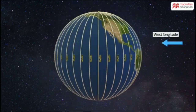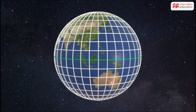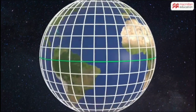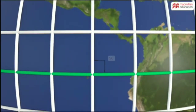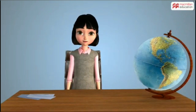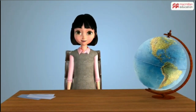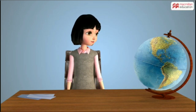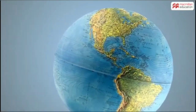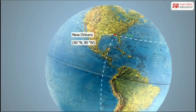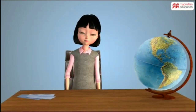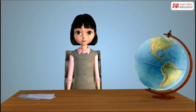Both the latitudes and longitudes form a grid in which they intersect each other at right angles. To locate a place on earth, you need to note the degrees of latitudes and longitudes. For example, the city New Orleans is located at 30 degrees north and 90 degrees west. Although only a few lines of latitudes and longitudes are shown on globes and maps, their number is infinite, so a city can fall on any one of these crossings.